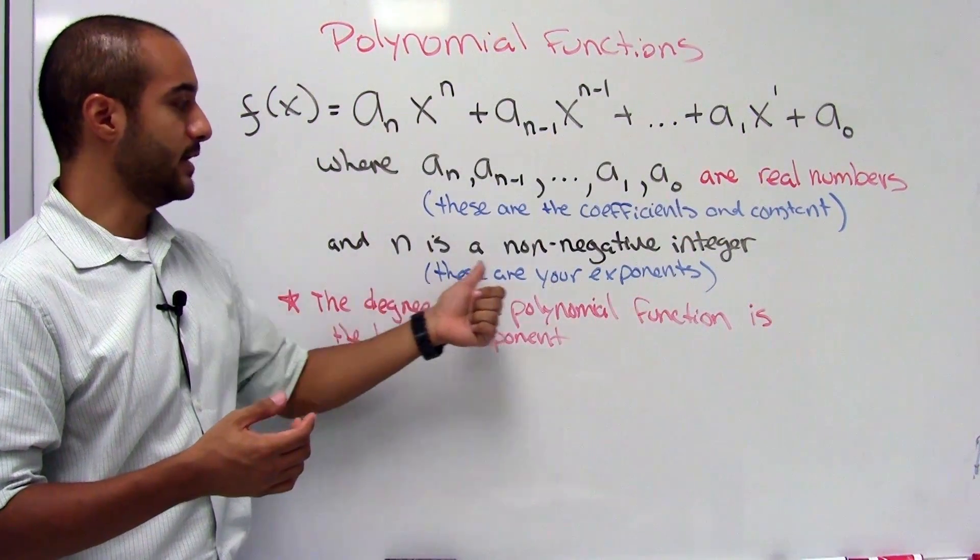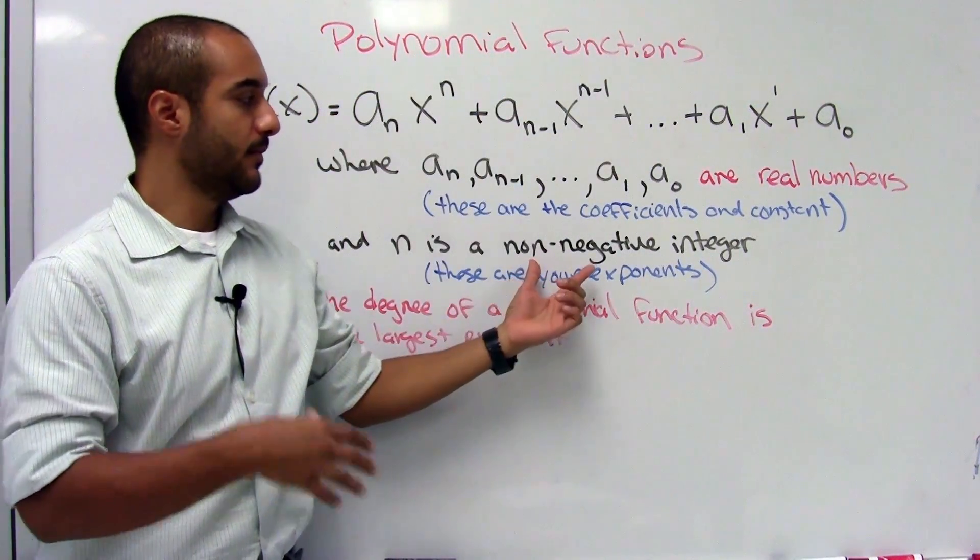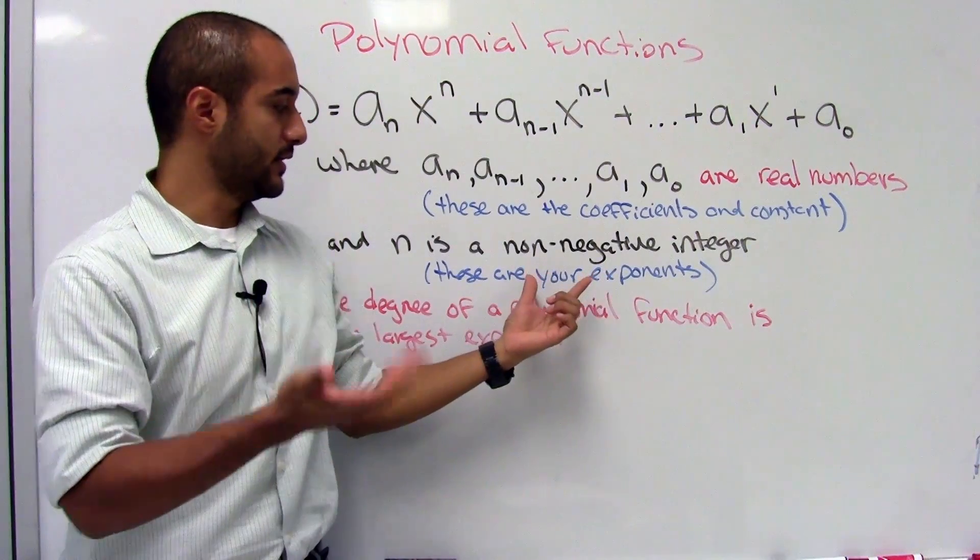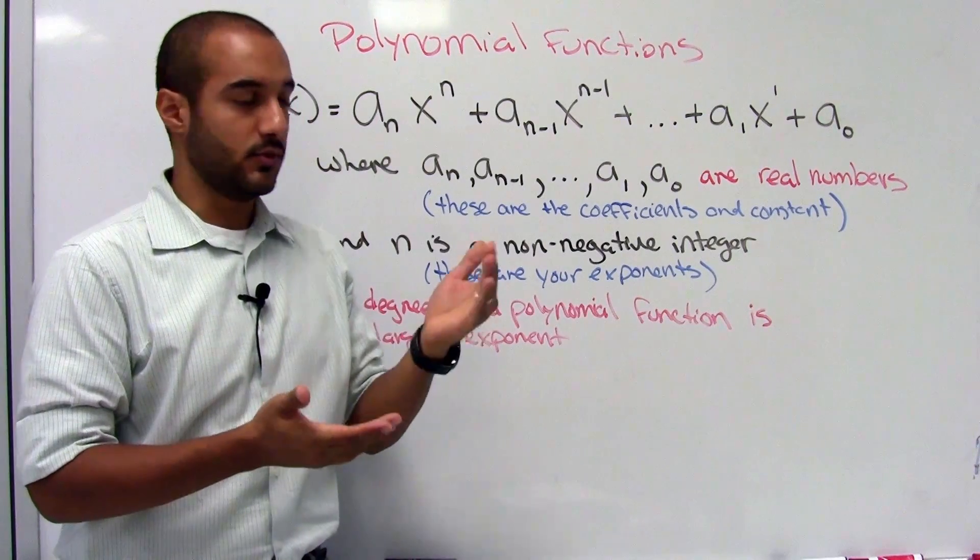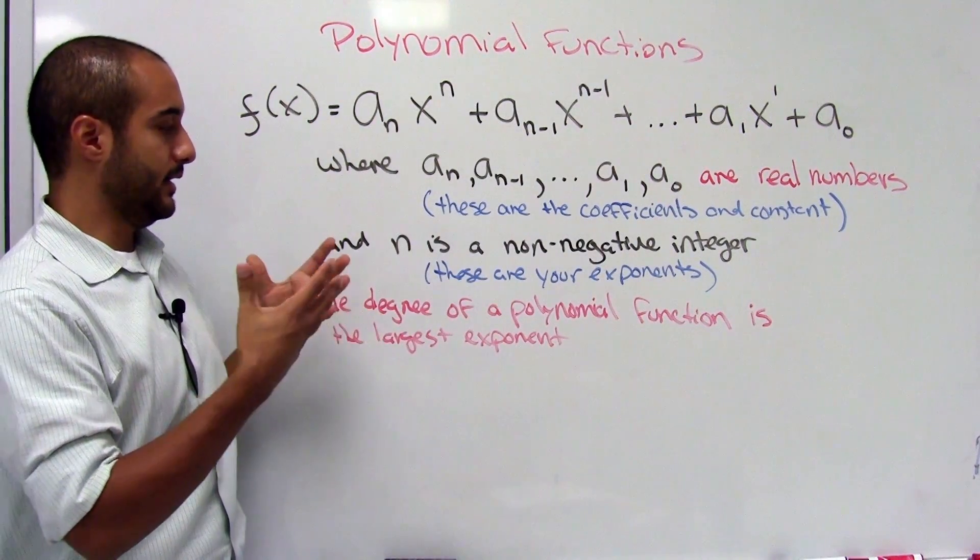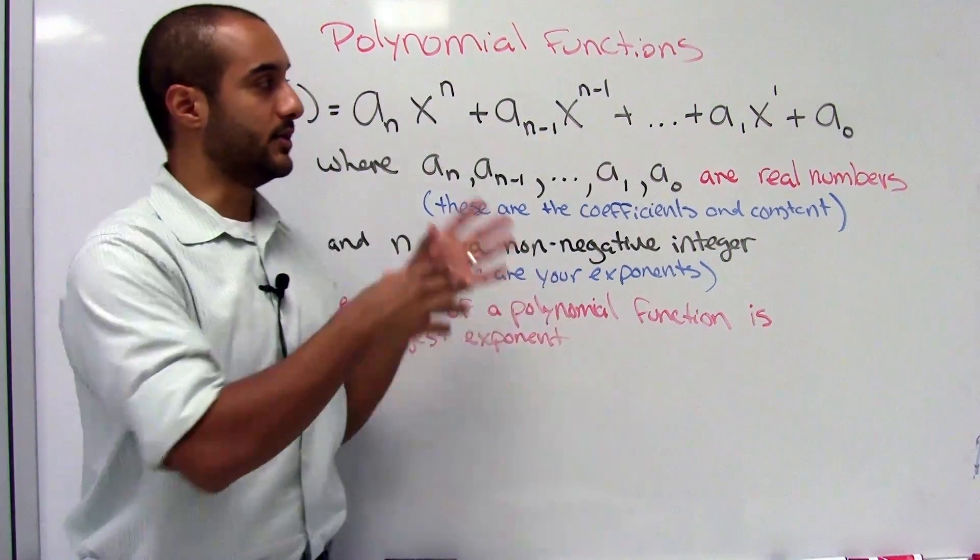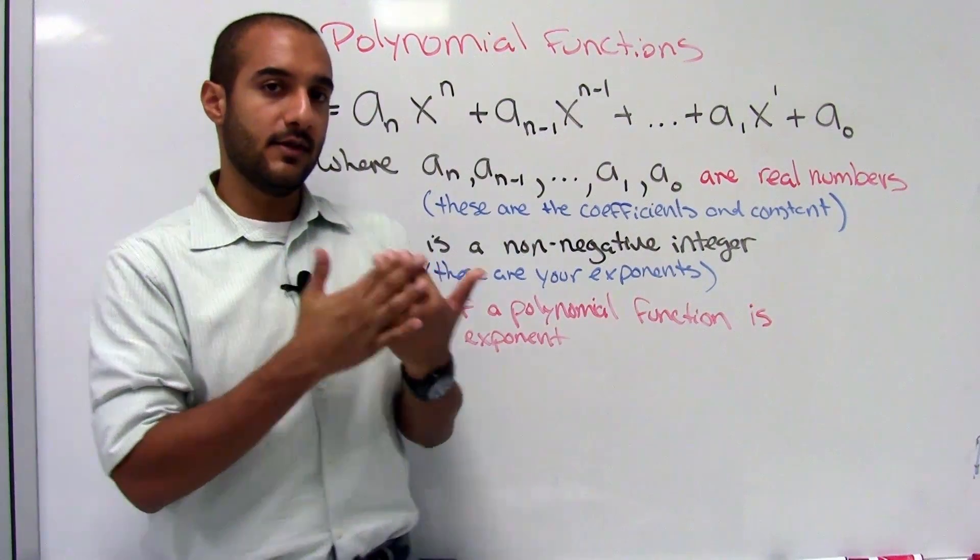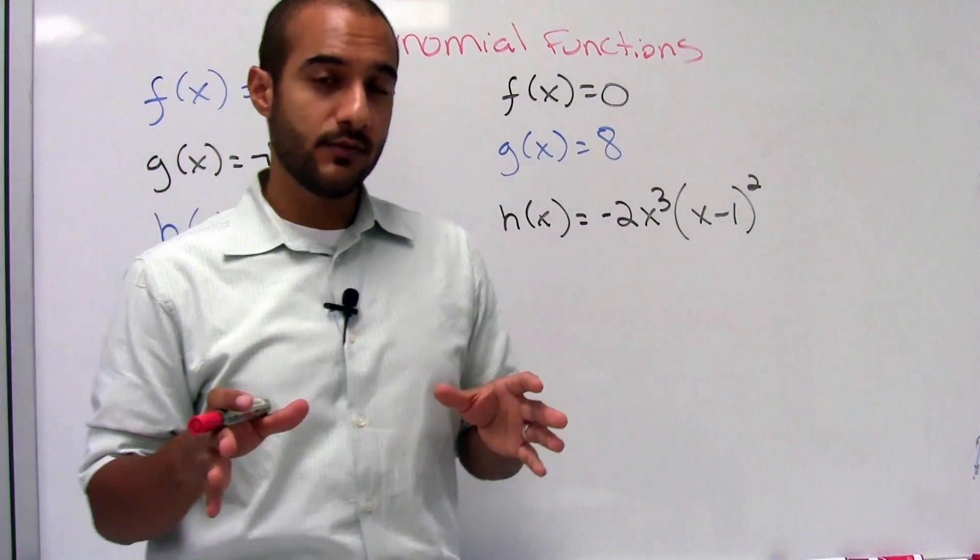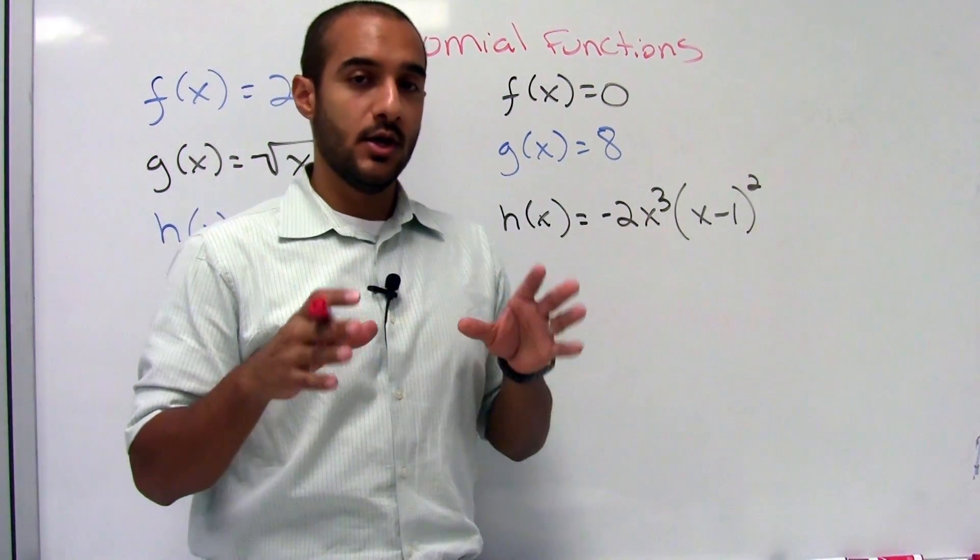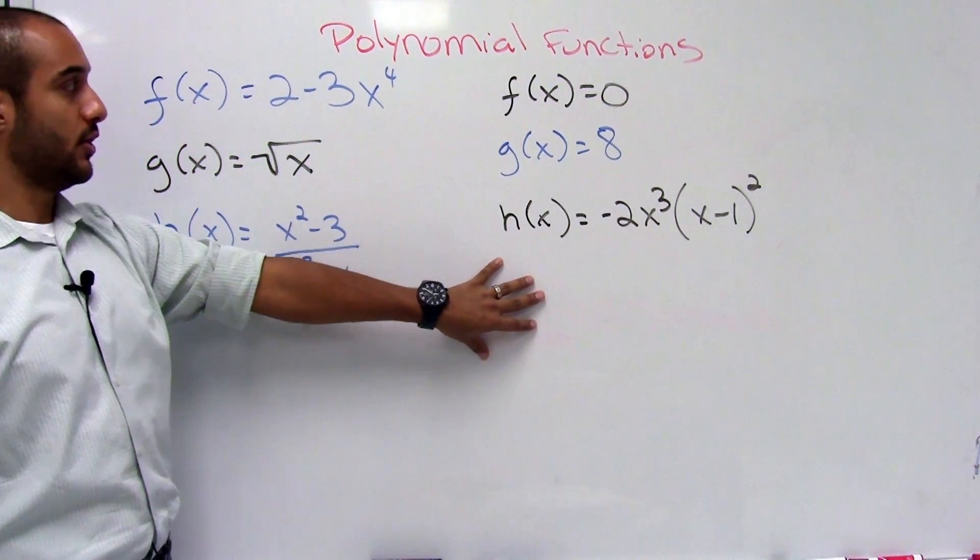And n is a non-negative integer, so it's talking about the exponents. Your exponents need to be non-negative integers, so they need to be positive and need to be integers. So you can't have any decimals or fractions in there. And we also need to know that the degree of a polynomial is the largest exponent that you have out of everything. So just by the definition, we can actually go ahead and ask you some questions.